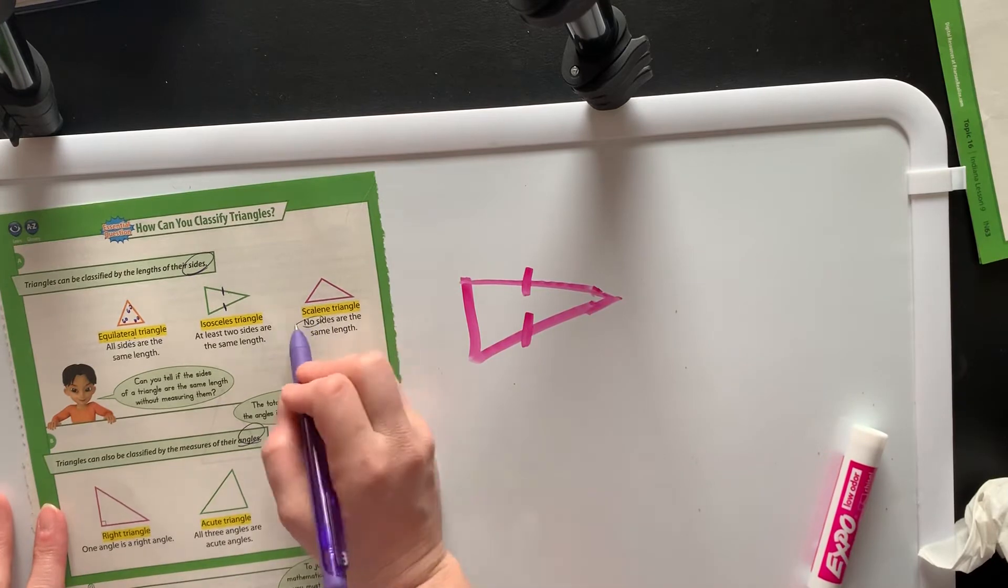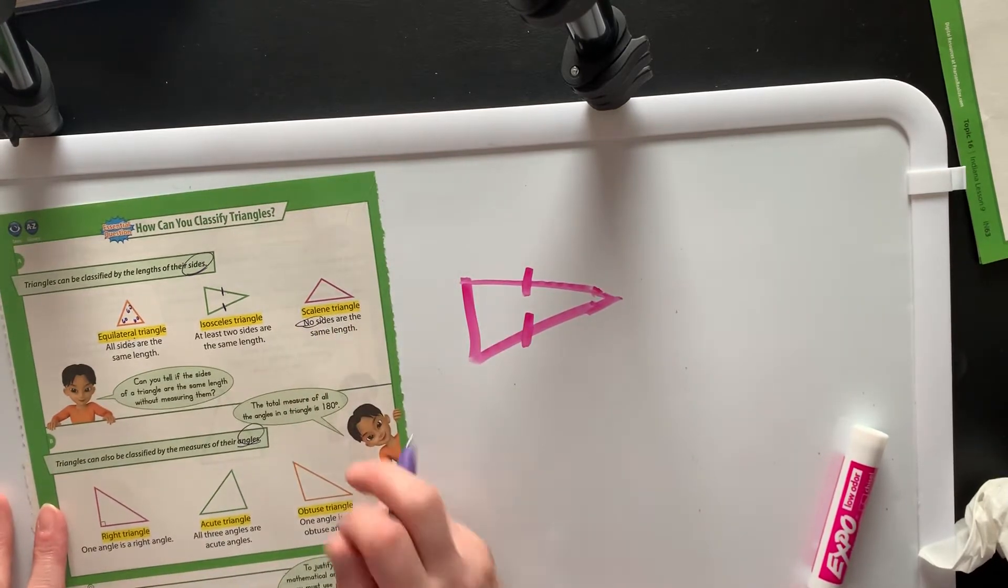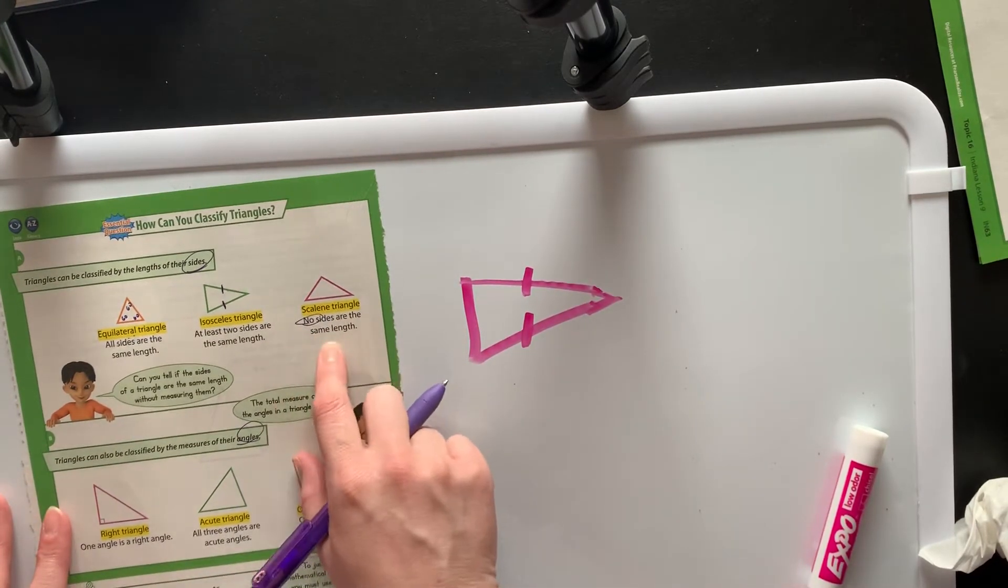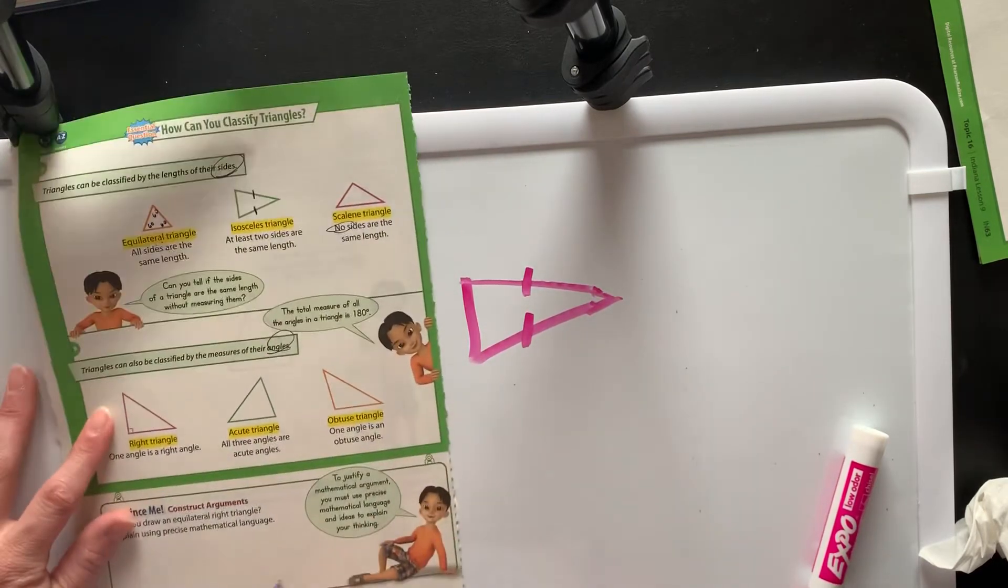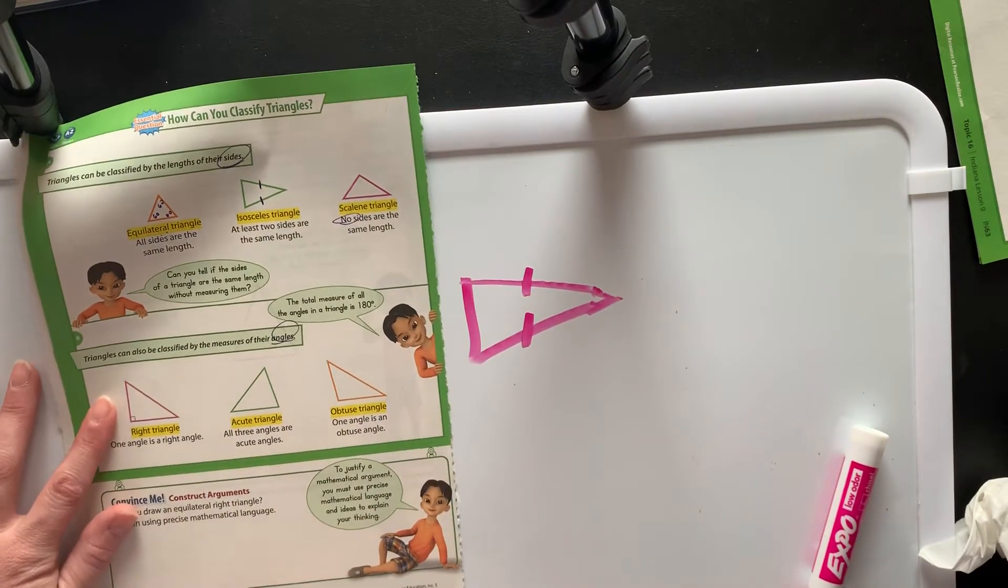And then a scalene has no sides the same length. So you need to remember equilateral, isosceles, and scalene. This is on the back of page 852 in your math books.